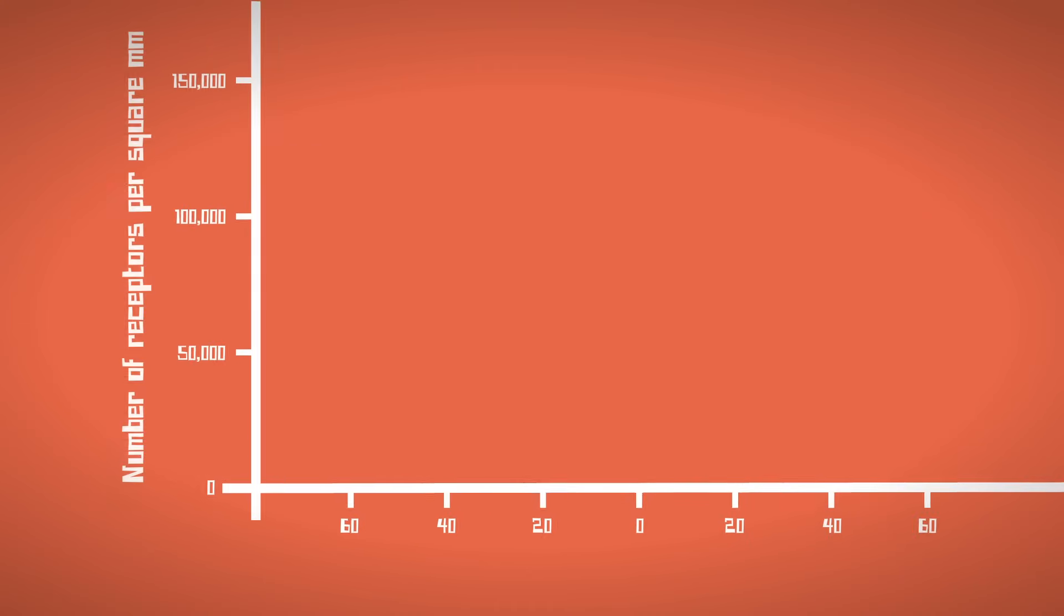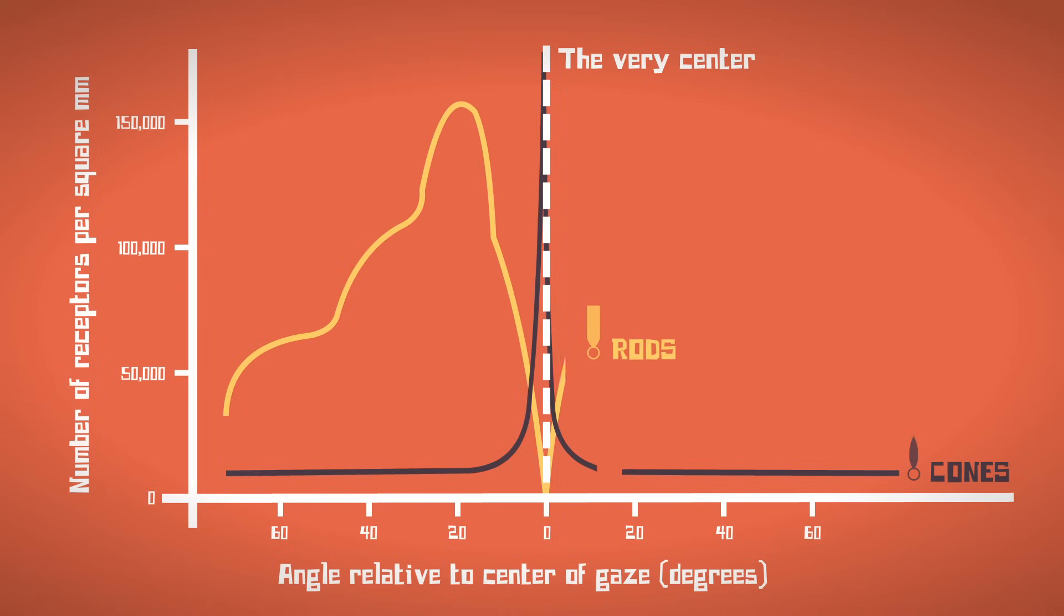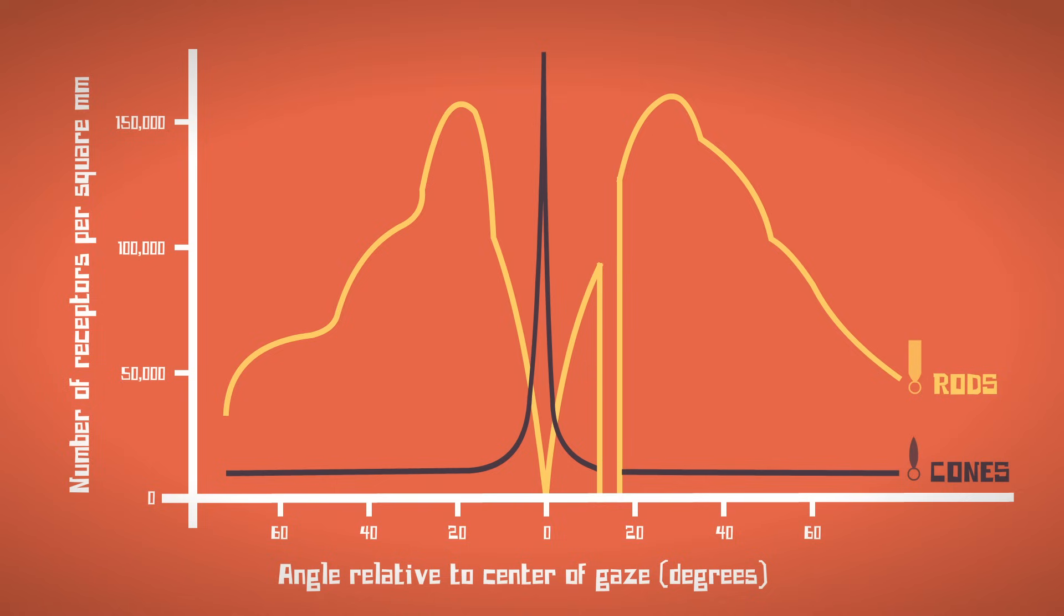Also in contrast to a camera, your photoreceptors are unevenly distributed, with no receptors for dim light in the very center. This is why faint stars seem to disappear when you look directly at them. The center also has very few receptors that can detect blue light, which is why you don't notice the blurred blue image from earlier. However...